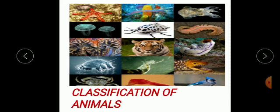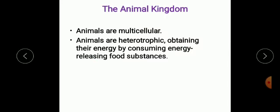Today's topic is Classification of Animals. Let us first discuss the general characteristics of Animal Kingdom. Animals are multicellular, i.e. they are made up of more than one cell. Animals are heterotrophic, i.e. they obtain their energy by consuming energy-releasing food substances.